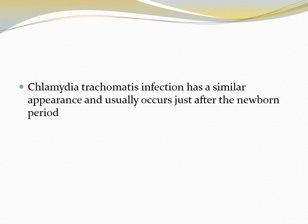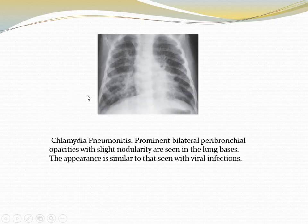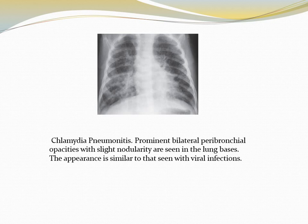Chlamydia trachomatis infection has a similar appearance and usually occurs just after the newborn period. Prominent peribronchial opacities with slight nodularity are seen in the lung bases. When you see peribronchial, ill-defined, shaggy heart appearance, this indicates some sort of atypical infection like viral pneumonia or mycoplasma pneumonia. While we see airspace opacification with air bronchogram and consolidation, there is no sign of volume loss.